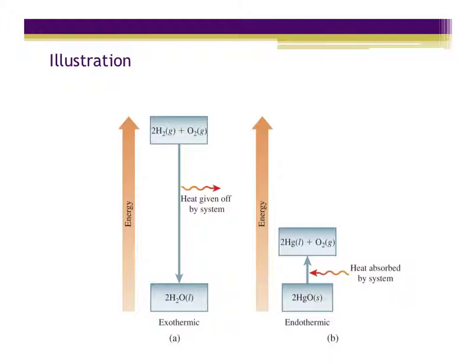This is an illustration showing what was just described. On a reaction coordinate, for an endothermic process, heat is given off by the system. Therefore, we lose energy as the heat is given off, and we go downward on our energy coordinate, which means the system will have less energy because it has given off energy as heat.